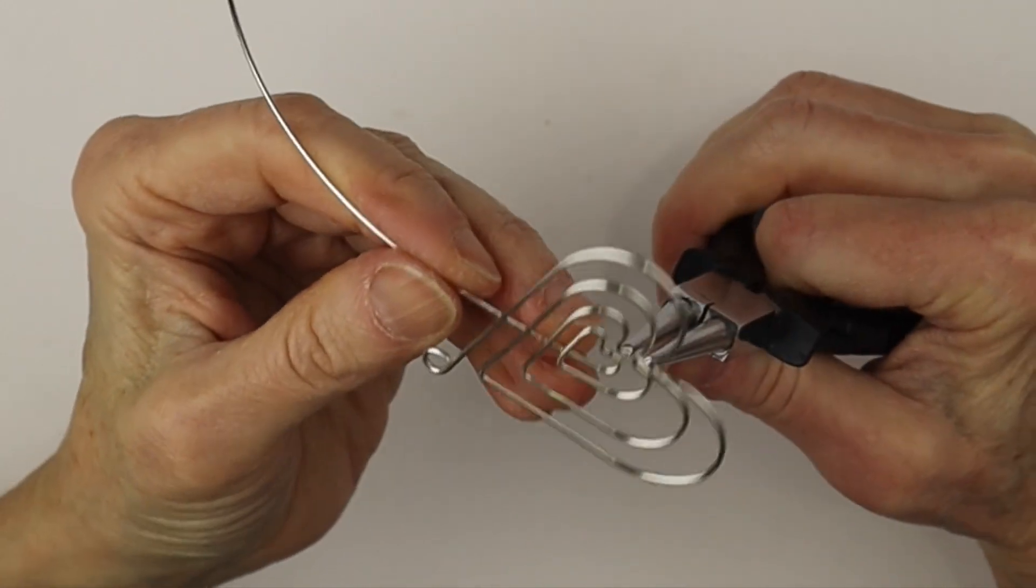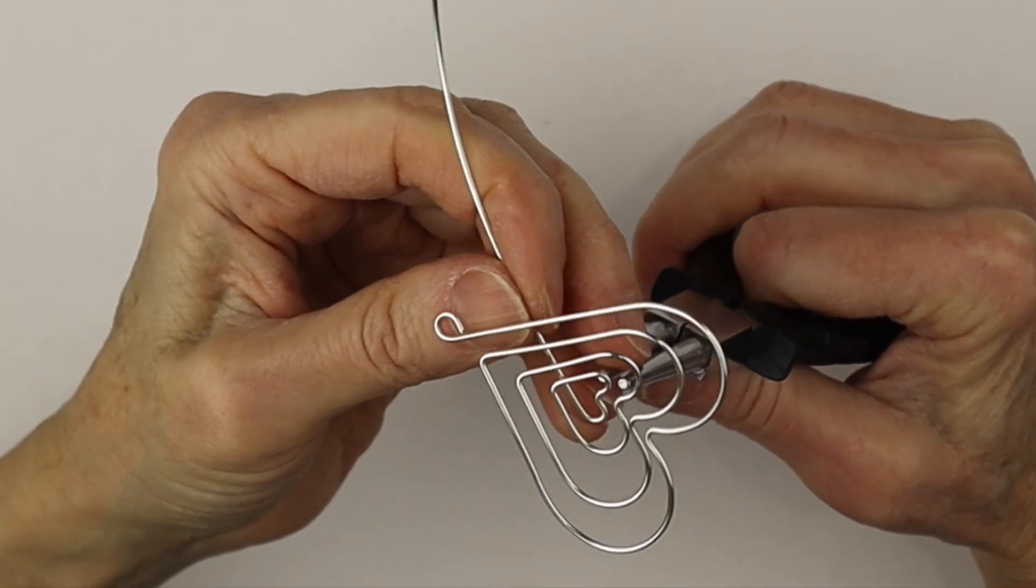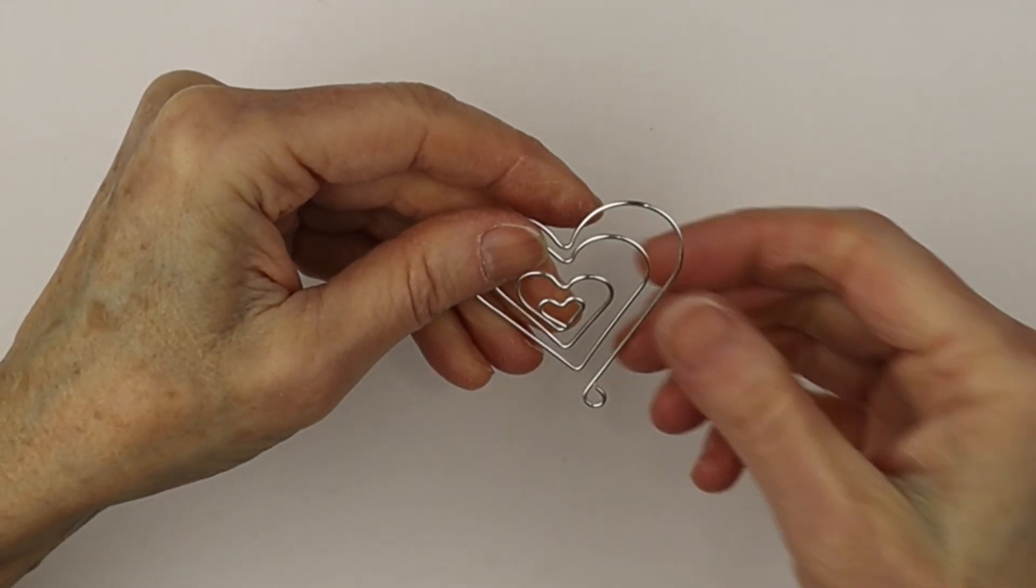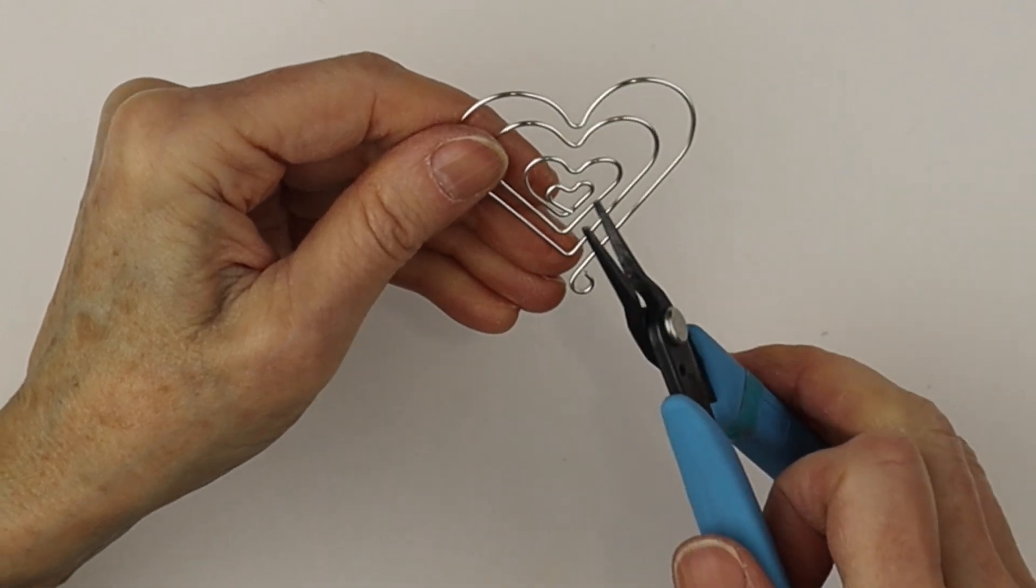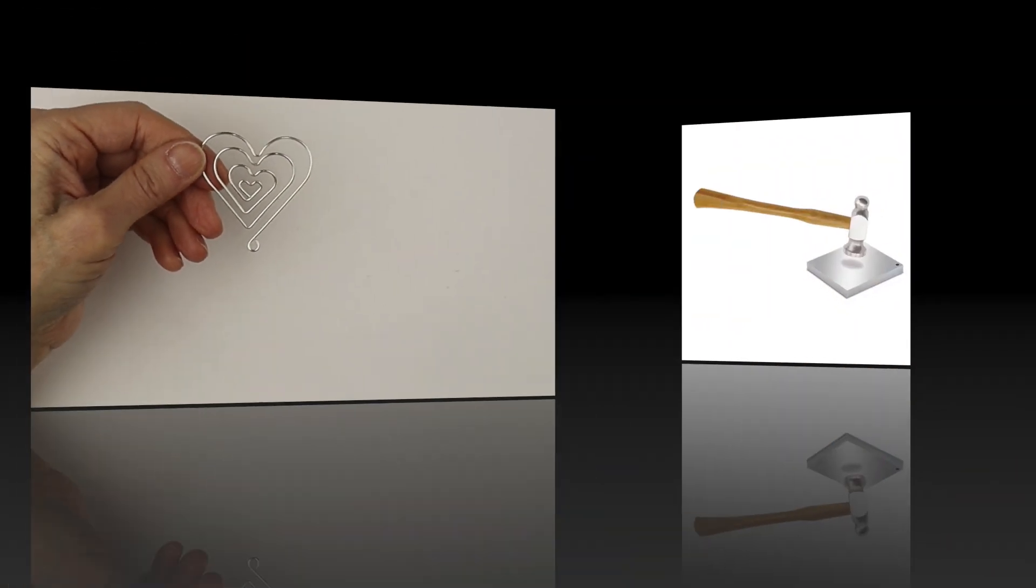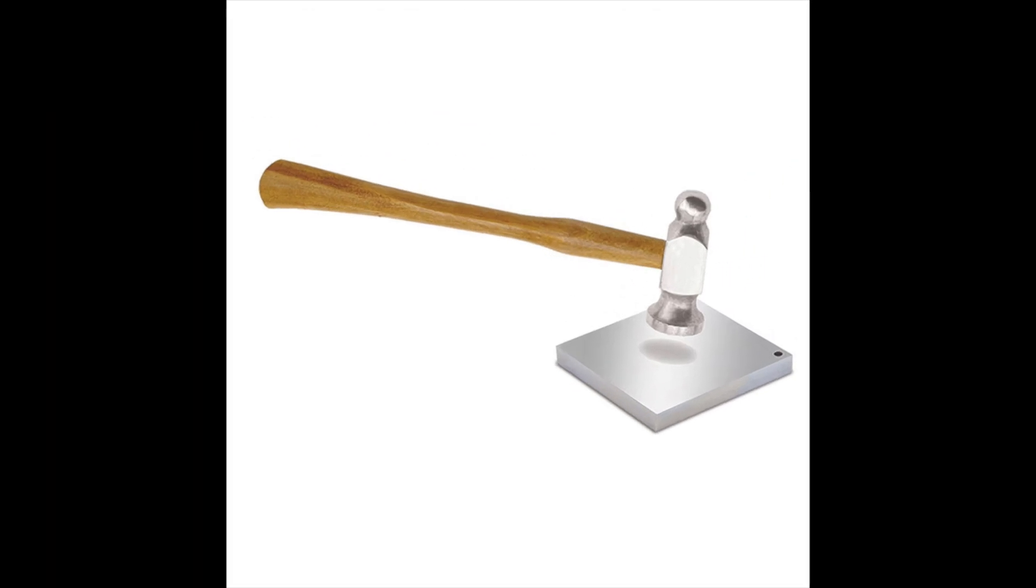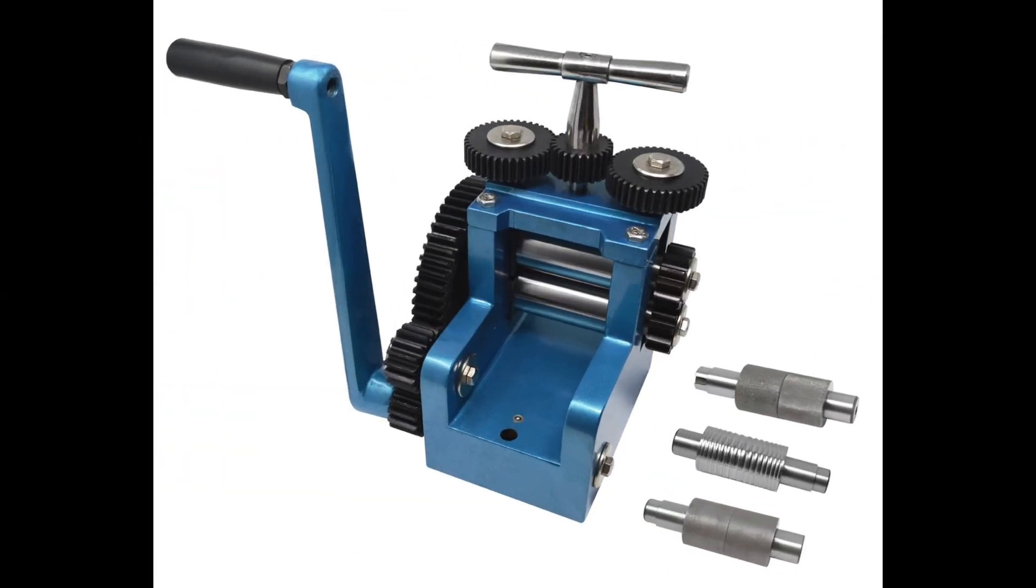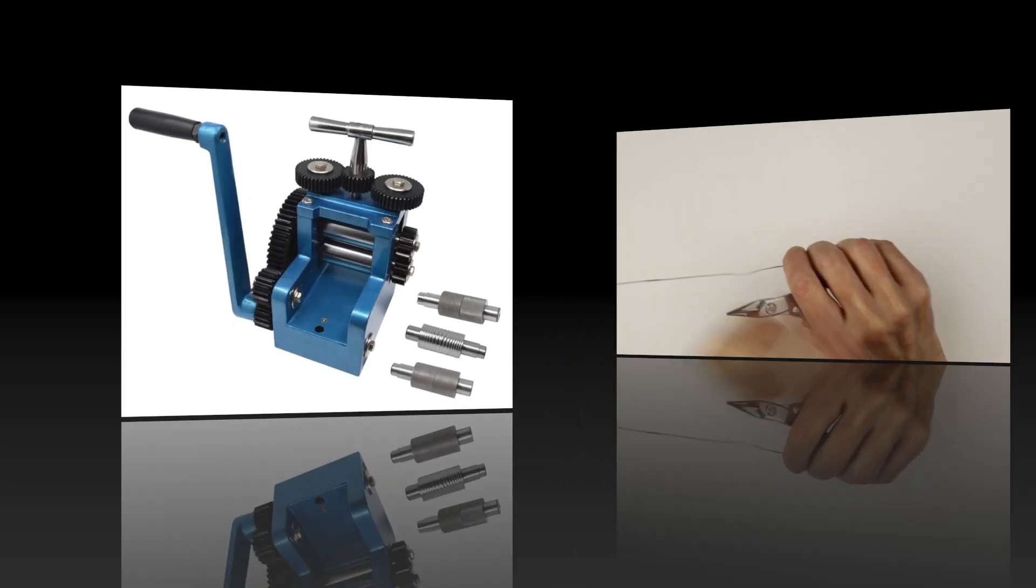You could do three rows if you prefer for the heart however you like it. And we've clipped the end and we're just going to pinch it in. So there we have that and we can hammer it if we want. You could flatten it with the pasta maker or with the rolling mill. This part is optional.